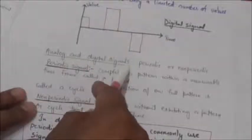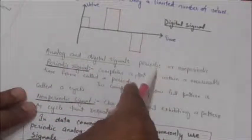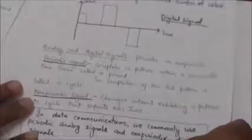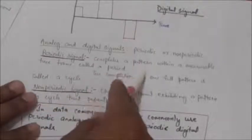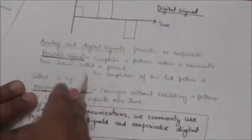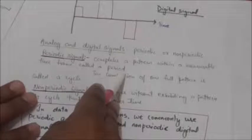Both analog and digital signals can be periodic or non-periodic. In a periodic signal, the signal completes a pattern within a measurable time frame called a period.